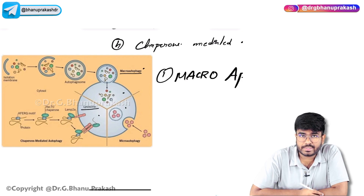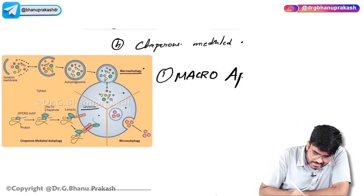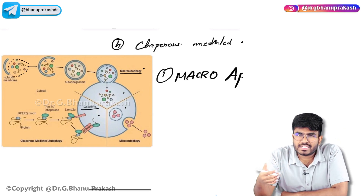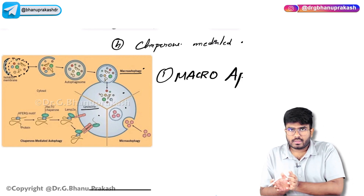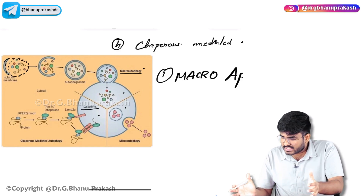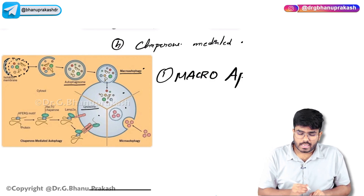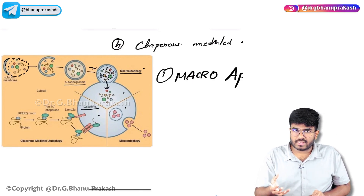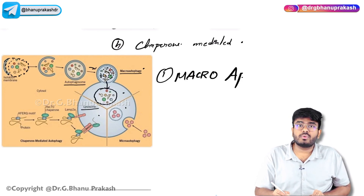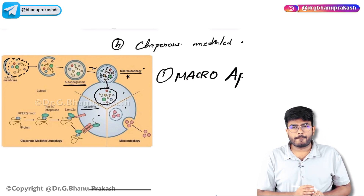Inside the lysosomes, there are hydrolytic enzymes which can break down the substances. In the cell cytoplasm, there are a lot of cell organelles and proteins present. Around these proteins, a membrane is getting formed — an isolated membrane. All these energy substances are packed into a vesicle called the autophagosome. This autophagosome brings all these protein materials, lipid materials, and cell organelles directly to the lysosomes, where these molecules are broken down for the production of energy. In macro autophagy, there is formation of an autophagosome in the cytoplasm.